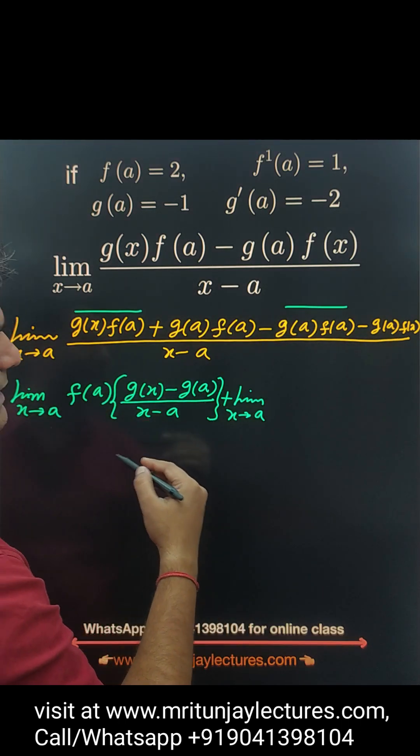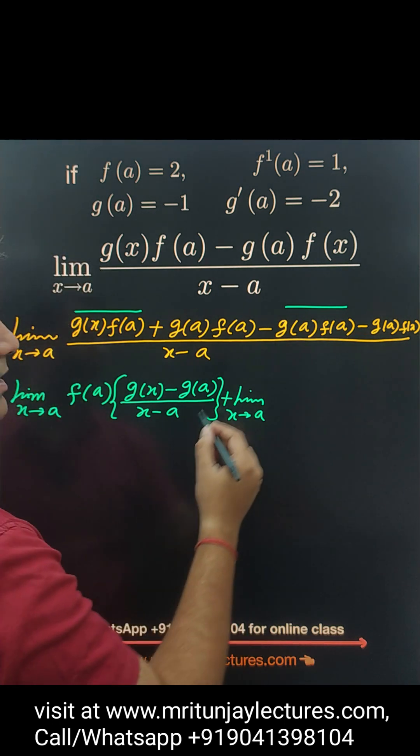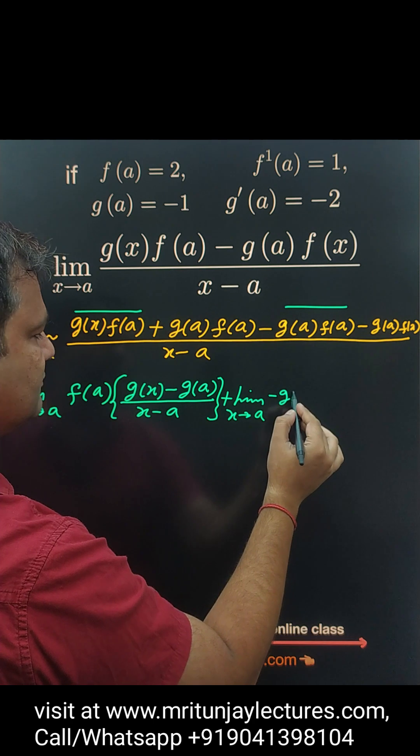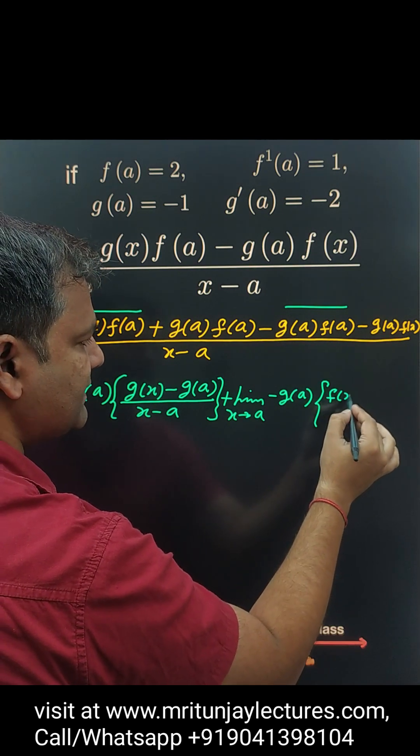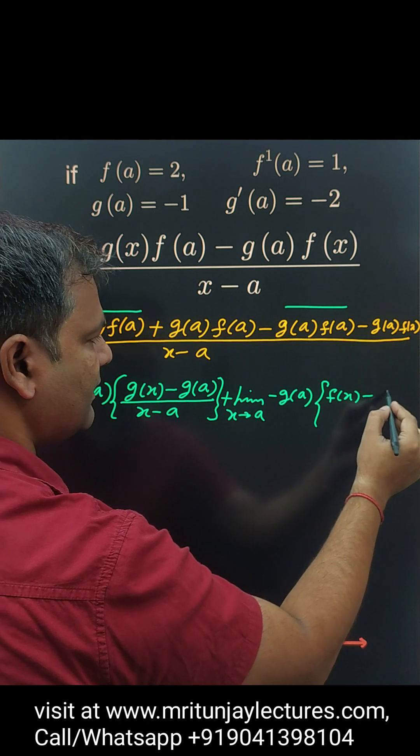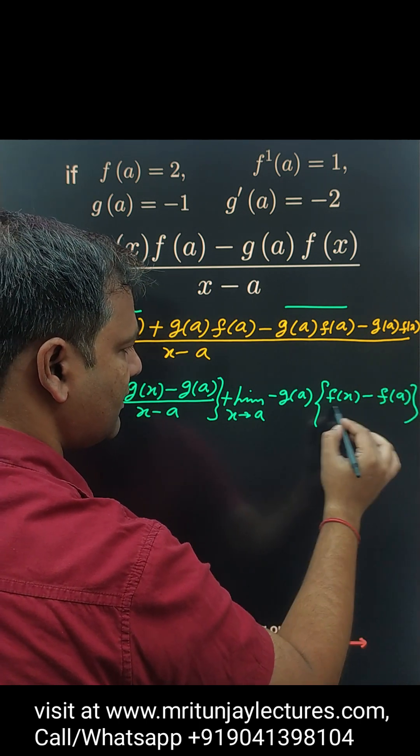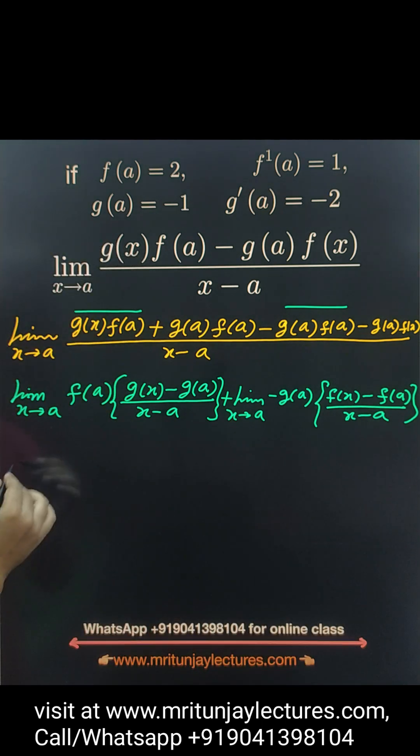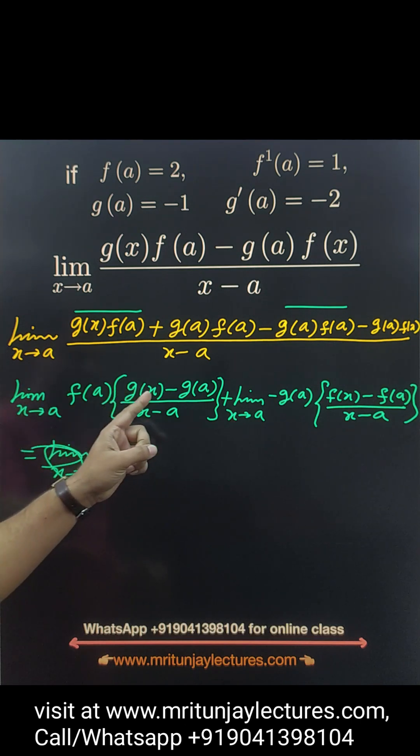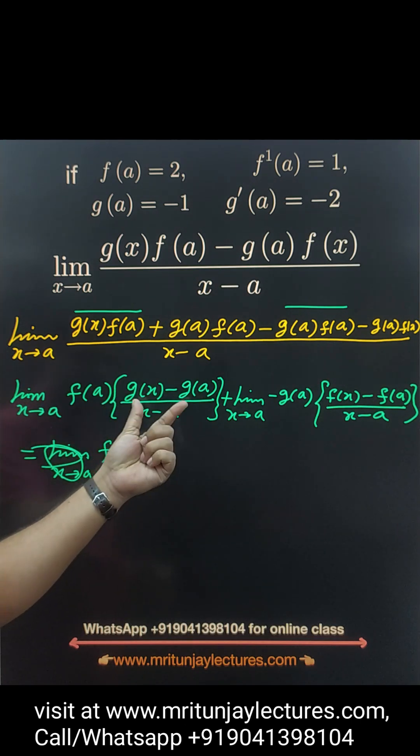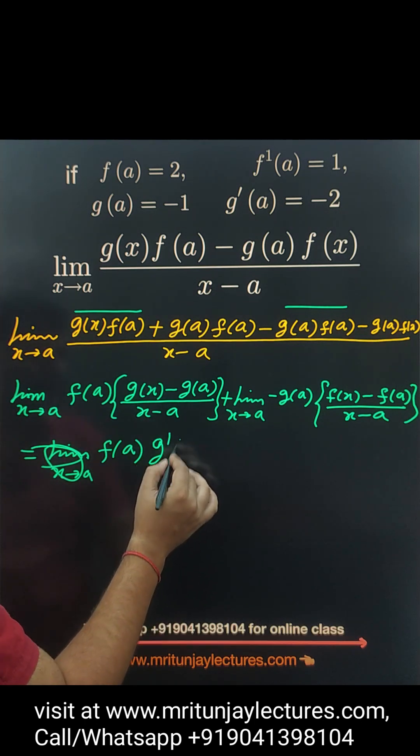If minus g(a) is common, then we got f(x) minus f(a) divided by x minus a. Now, after that limit x tends to a. Basically, that one f(a), what about that value? Limit x tends to a, g(x) minus g(a) upon x minus a, that is g prime a.